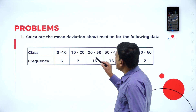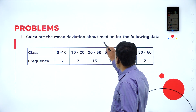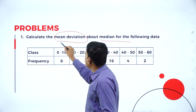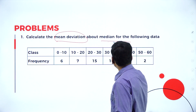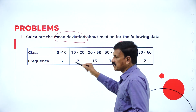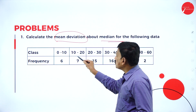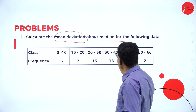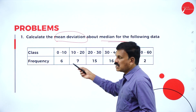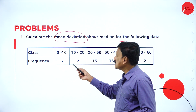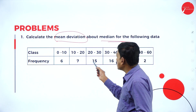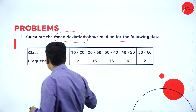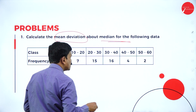Let us discuss the first problem. Calculate the mean deviation about the median for the following data. Class given: 0 to 10, 10 to 20, 20 to 30, 30 to 40, 40 to 50, 50 to 60, and the frequency f is given as 6, 7, 15, 16, 4 and 2.